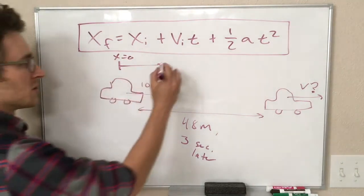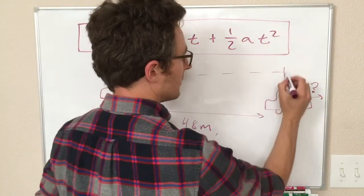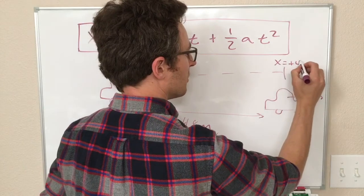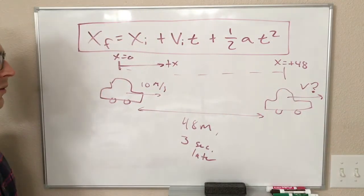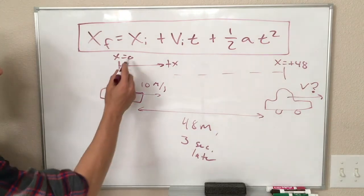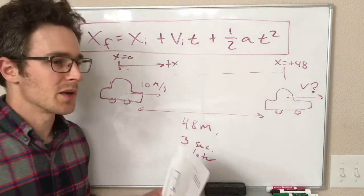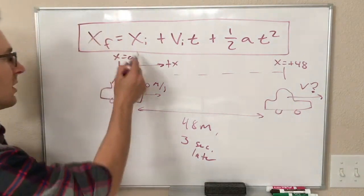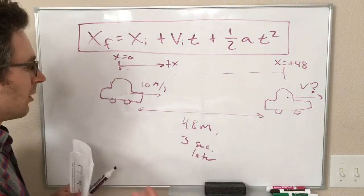We're just going to start our coordinate system here and have our positive x direction to the right, as always. So if this is x equals 0, then 48 meters away from that is x equals plus 48. So you probably could have guessed that that was the right way to do it. We could also call this x equals 100, and this x equals 148. And we get the same answer. It doesn't matter, but using 0 here is a very convenient choice. It makes the math easy.